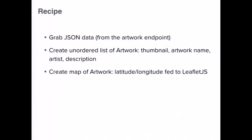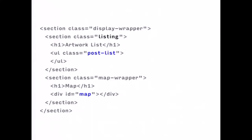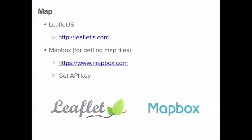The recipe: grab JSON data, create an unordered list of artwork — so teasers in a list with thumbnail, artwork name, artist, and description — and then let's put this stuff on a map. Remember that endpoint we set: slash artwork — that's your output. We've got all the regular post metadata, plus the ACF metadata and featured image metadata, with all the array keys we'll need in JavaScript. The HTML on the client side is actually really simple — we've got a post list that we'll write to and a map div. Leaflet JS and Mapbox for the map. You basically need a Mapbox API key from them so you can get map tiles into your Leaflet JS map.